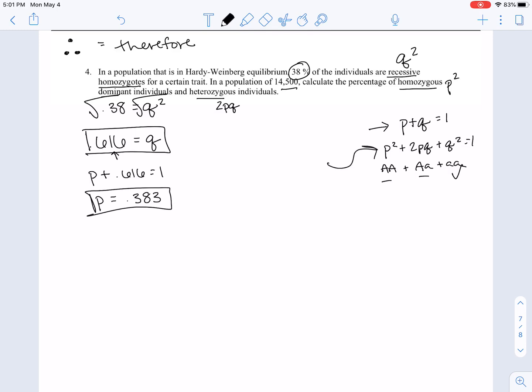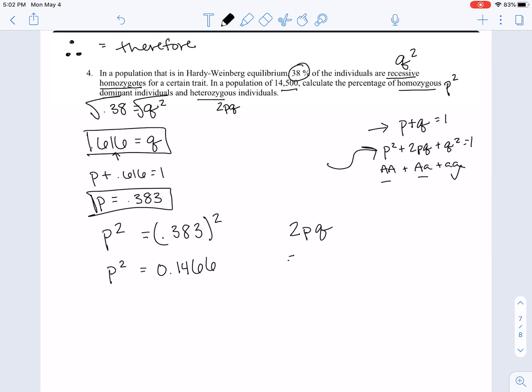Now all we have to do is plug and chug to get these values. So if I do P squared, that's just going to be 0.383 squared. So 0.383 and I'm going to square it. So P squared is equal to 0.146. Seven technically, but that's fine. I'll just add another six. That's fine. So that's P squared. So if I'm looking for 2PQ, I'm just going to do 2 times P, which we found right here, 0.383 and Q, which we found right here, 0.616.